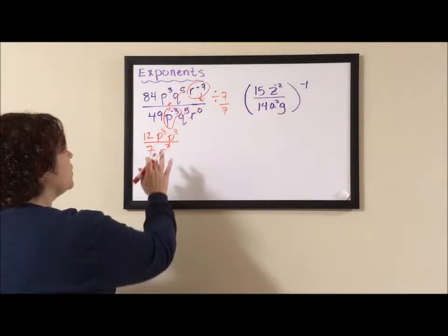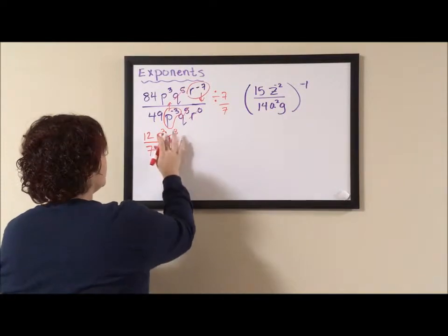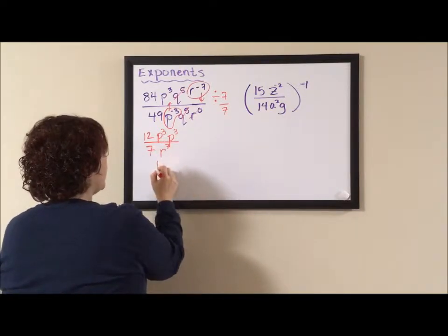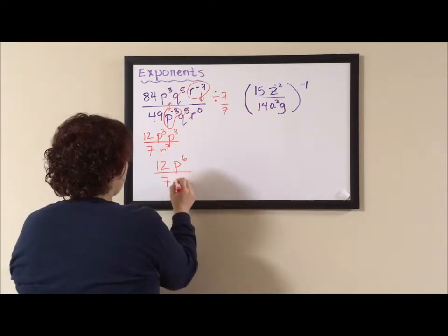Now when you have same bases with exponents, you add your exponents. So 3 plus 3 is 6. So I have 12 P to the 6 divided by 7 R to the 7.